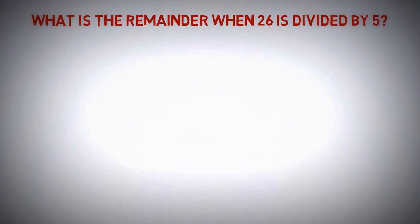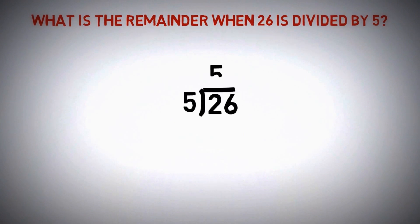What is the remainder when 26 is divided by 5? Well, it's been a while and you might hate maths now, but still it's an easy one. Yes, you correctly thought — the remainder is 1.